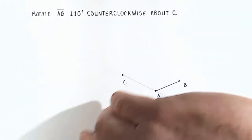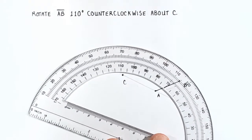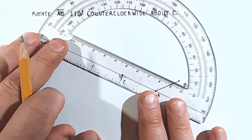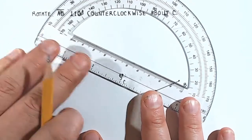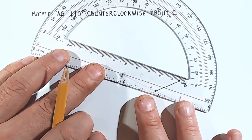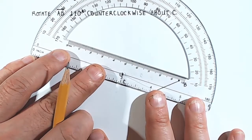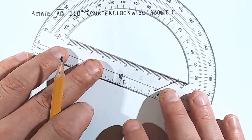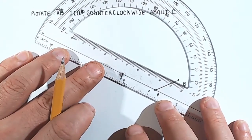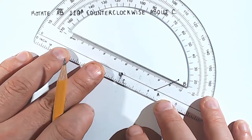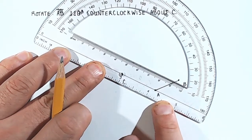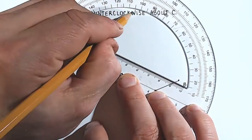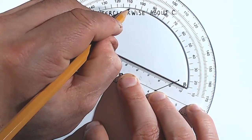Now what I want to do is spin my protractor around and locate 110 degrees on the protractor. I'll center point C directly beneath this little hole in the protractor, and then I will line up my guideline very carefully so everything is positioned directly on top of the stuff beneath it. Now we locate 110 — 110 is right here — and we're going to put a little dot right there.